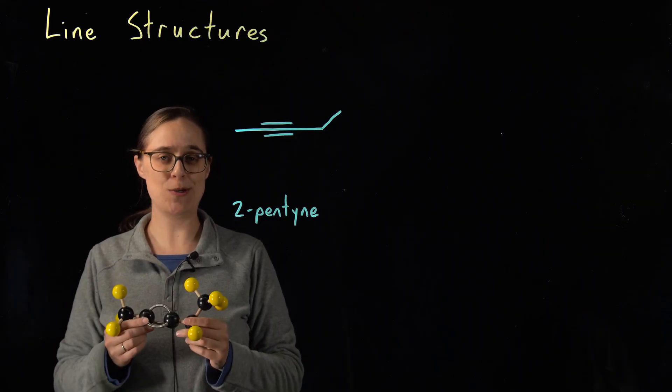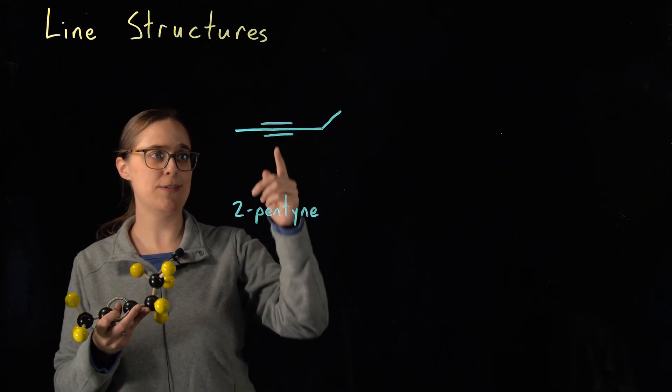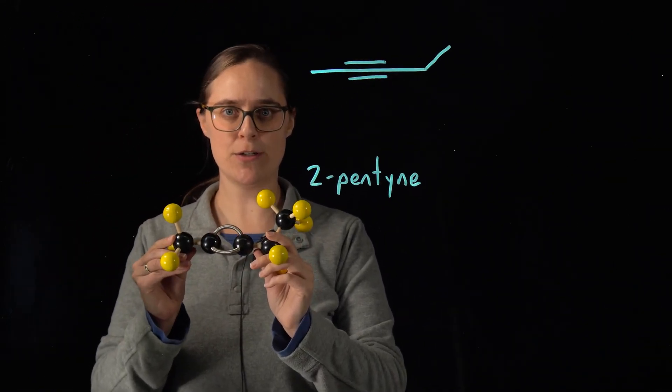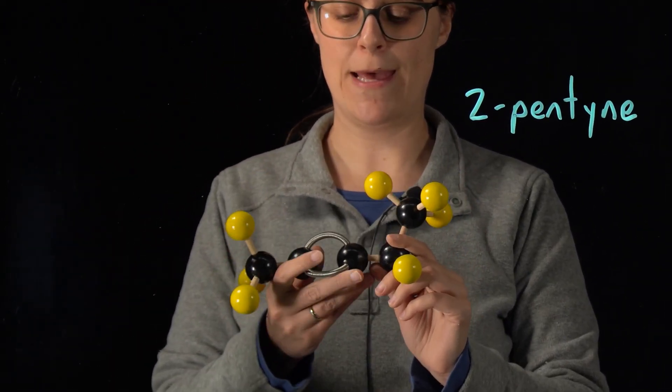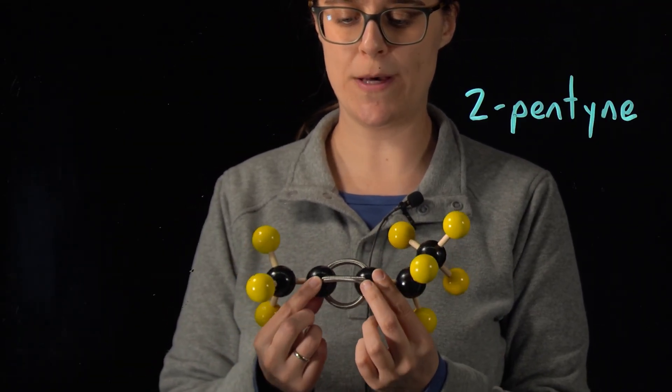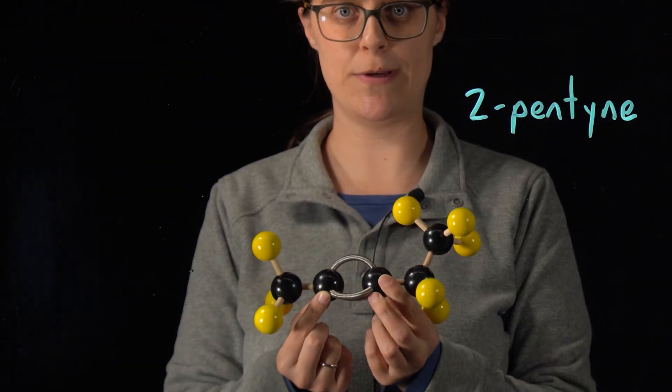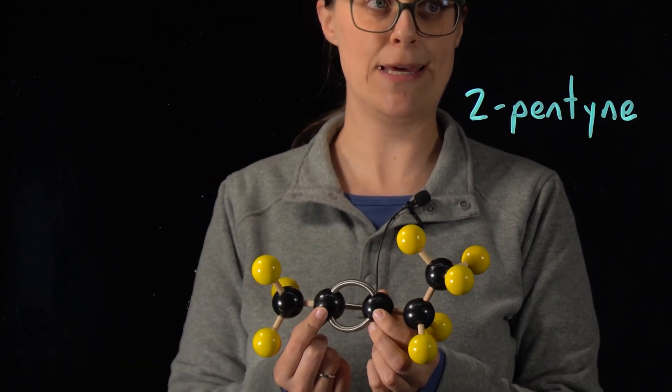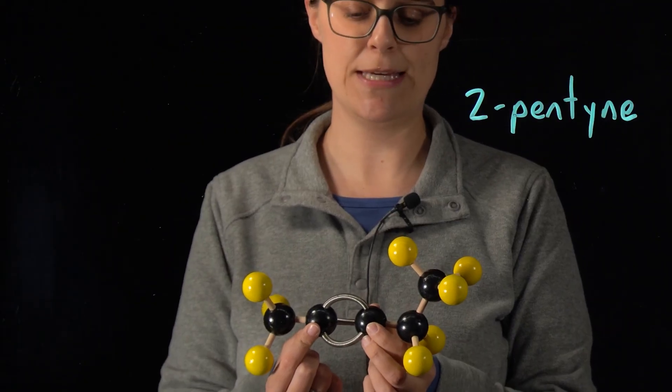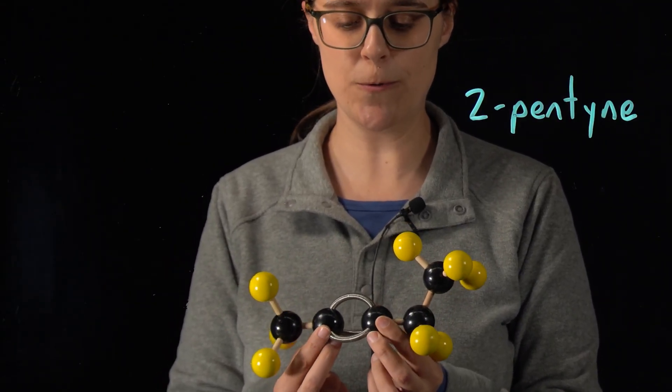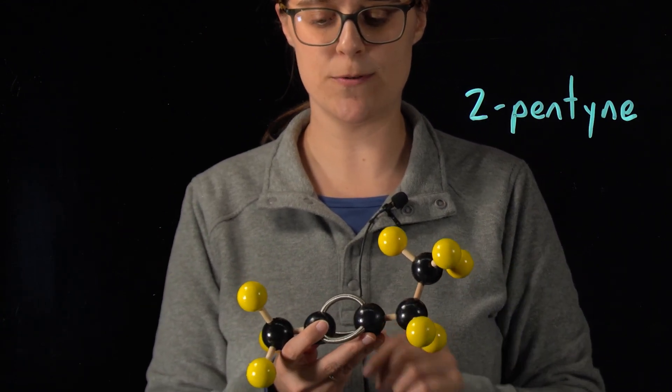Next problem. I wanted to show you an example with a triple bond. So this is a line structure for 2-pentyne. Let's take a closer look at this molecular model. I have five carbons in a chain, one, two, three, four, five. I have a triple bond between carbons two and three.